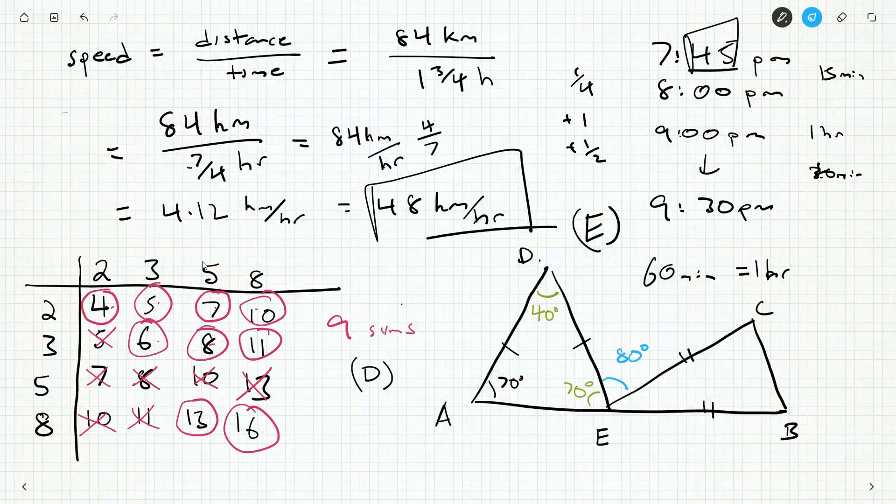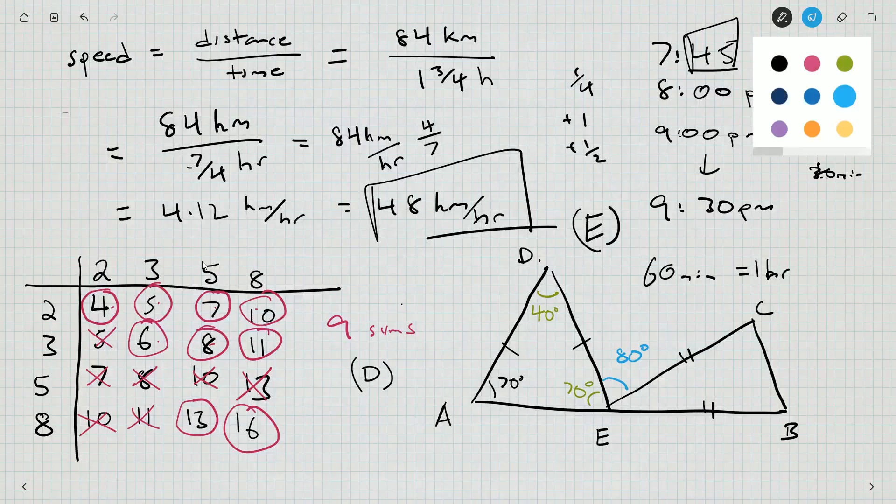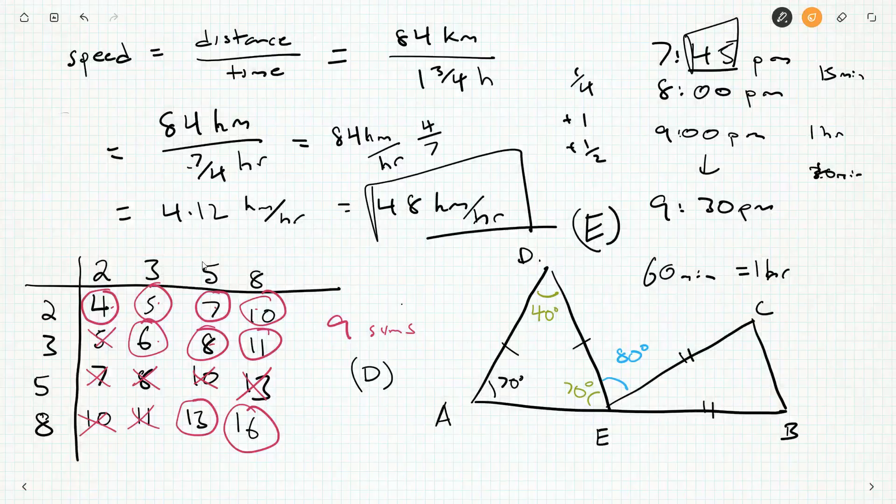So, I got 70, 80. And what's the other thing that adds up to 180 degrees? It's a full line. So, this angle down here, plus 70, plus 80, must be 180. And we can quickly calculate. We get 30 degrees here.